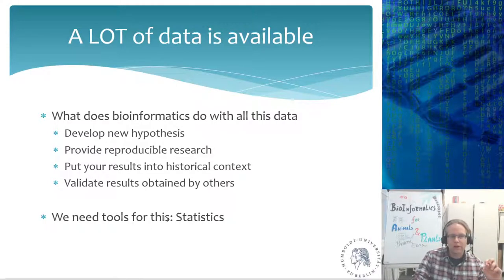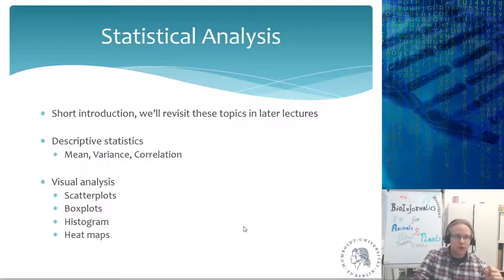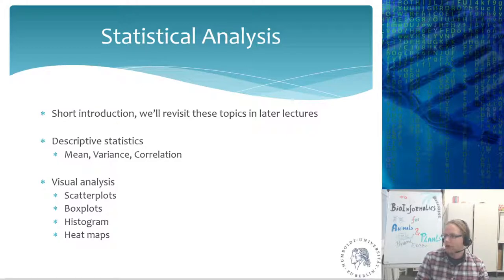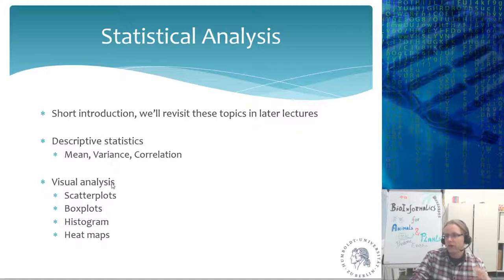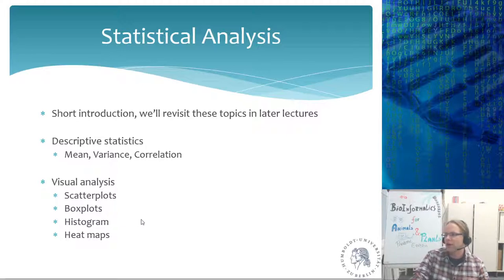We need tools to do reproducible research and to compare results — to see if the significance we got or the direction of the effect matches what others found. The statistical analysis will include a couple of examples from real research. Today I want an overview of descriptive statistics — mean, variance, correlation — and different types of visual analysis, because only when you visualize results do you really understand what's going on. We'll cover scatter plots, box plots, histograms, and heat maps: the four main visualization techniques.